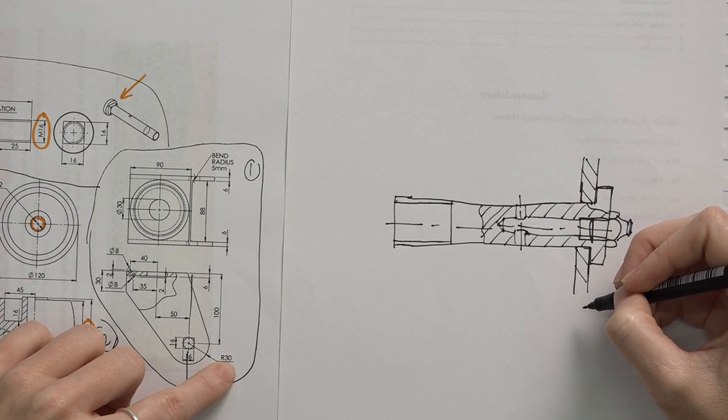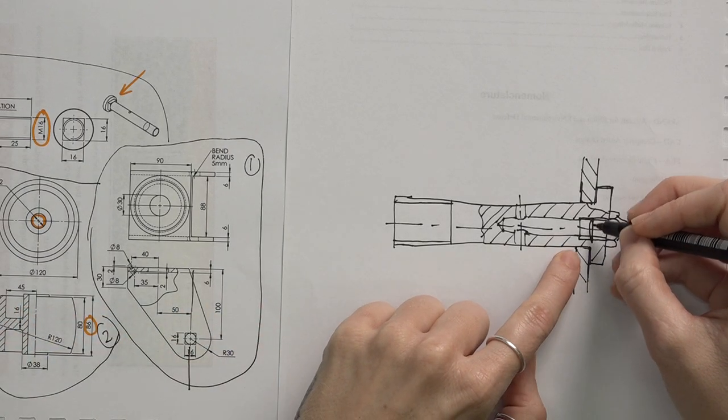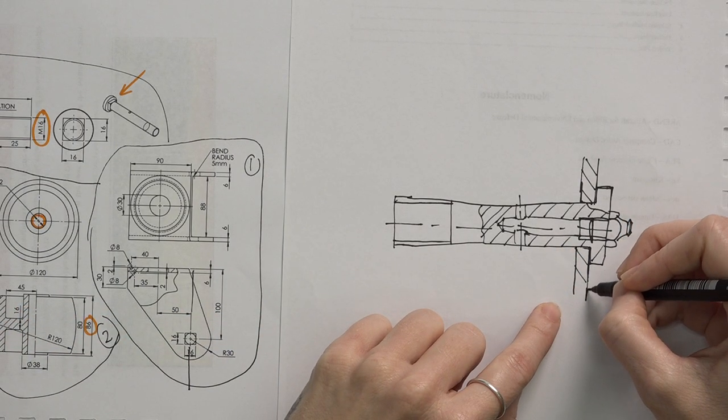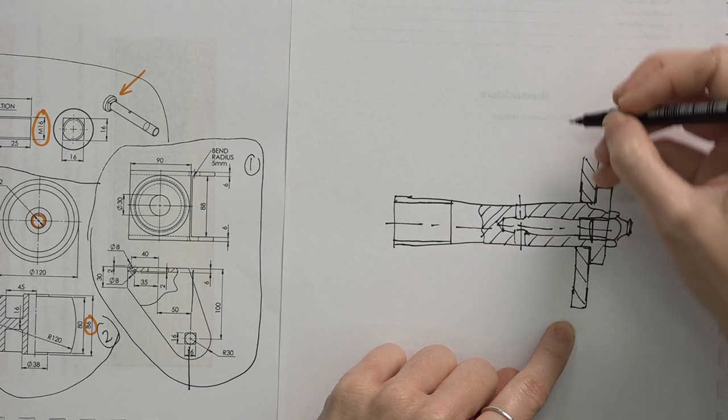So that bottom piece will only be 30. So if this is 16, 30 is probably approximately like that. So I can already say that's where the bottom part will finish.